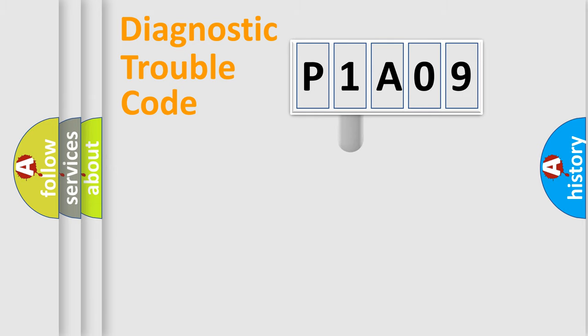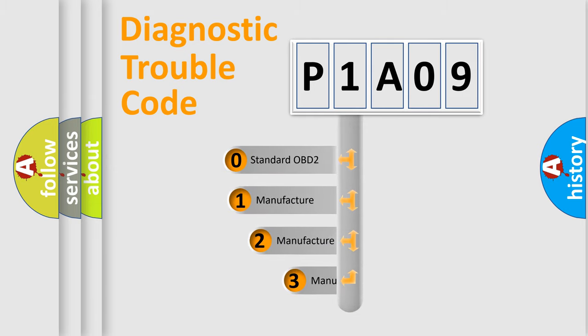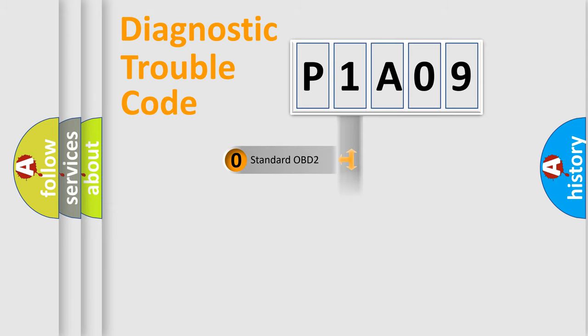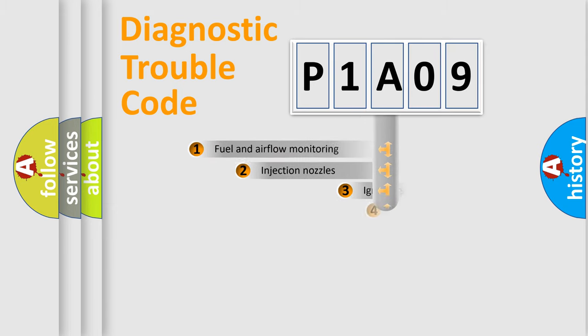This distribution is defined in the first character of the code. If the second character is expressed as zero, it is a standardized error. In the case of numbers 1, 2, or 3, it is a more specific expression of a car-specific error.